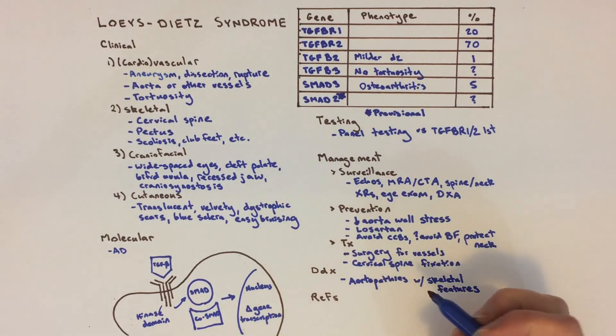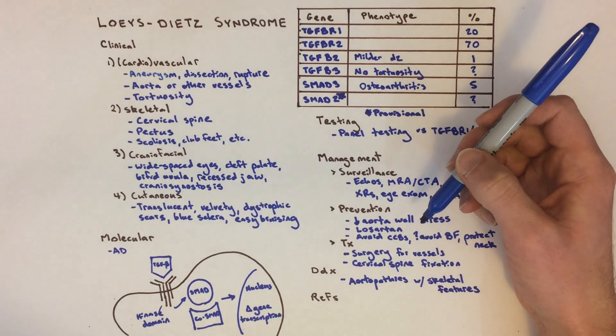One reason it's important to diagnose a specific syndrome in a patient is because the surgical threshold of how big you let the aorta get before operating on it differs depending on the syndrome.